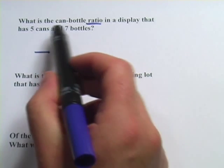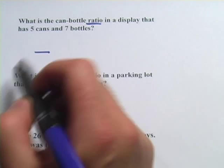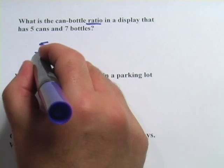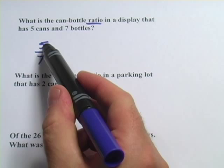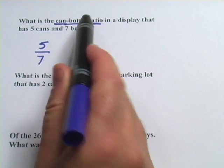This first problem says what is the can-bottle ratio in a display that has 5 cans and 7 bottles? So if it's can-bottle, we start with the top, we would go 5 to 7. So this is a ratio of 5 to 7. I put the 5 on top because the can came first, 7 on bottom because the bottle came second.